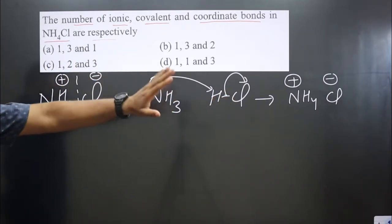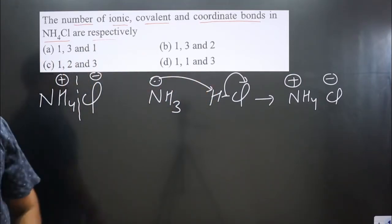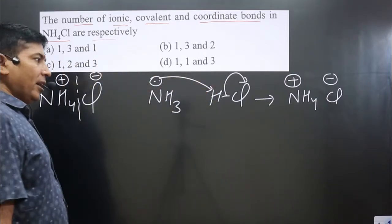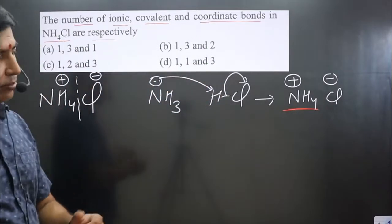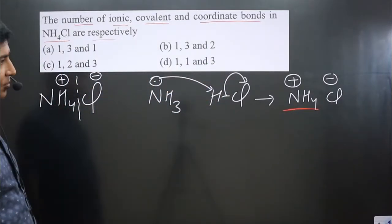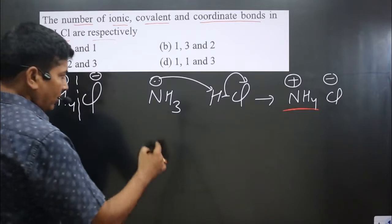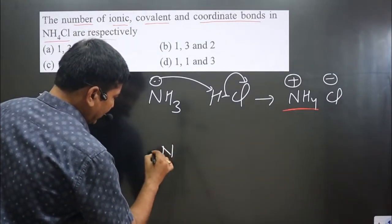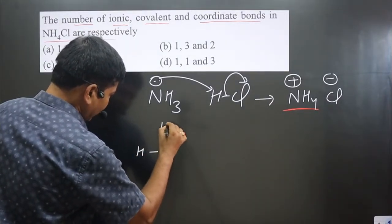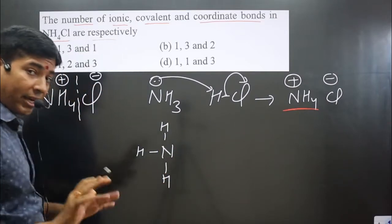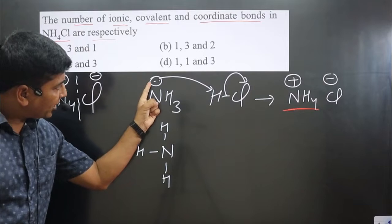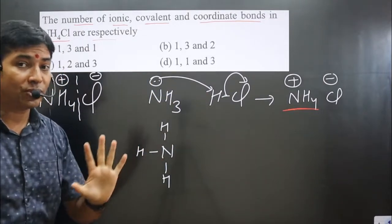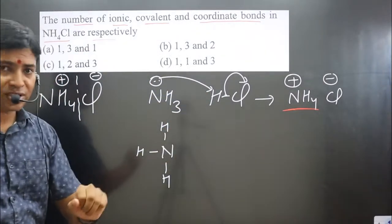Now we study the geometry of this ammonium ion, because more than one atom is present. This nitrogen is already attached to three hydrogens. Pay attention carefully: this nitrogen is donating electron pair to hydrogen because hydrogen was electron deficient.